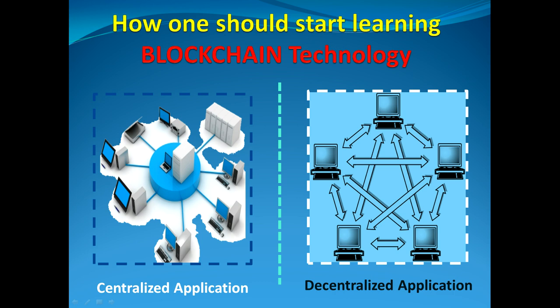Before understanding the blockchain technology concept, we really need to understand what kind of application infrastructure we currently use to build our applications. To answer that question, we usually use the N-tier architecture with the client-server model. So in the N-tier model, we have a presentation layer on one machine, an application layer on a different machine, and a data layer on yet another machine.